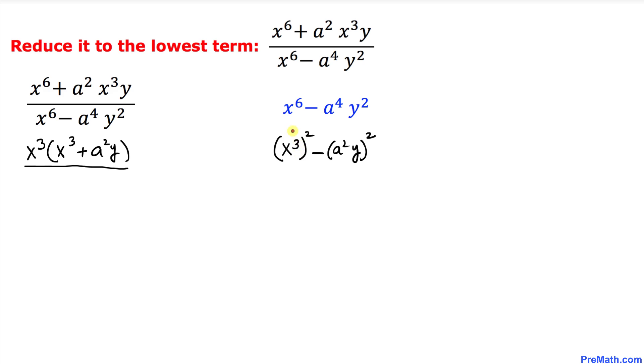Now we can see that this expression represents a difference of two squares. Therefore, we are going to use this formula: a^2 minus b^2 equals (a minus b) times (a plus b).